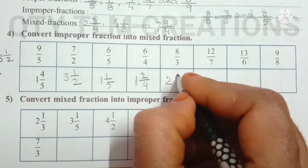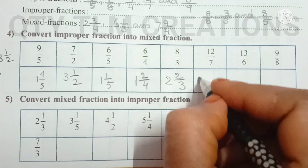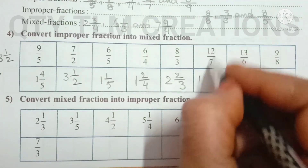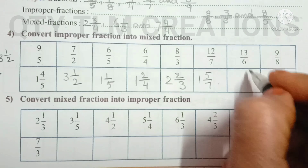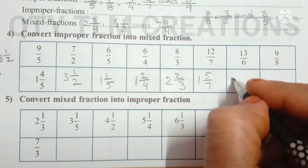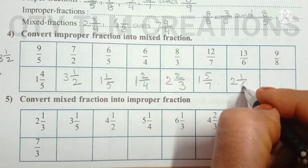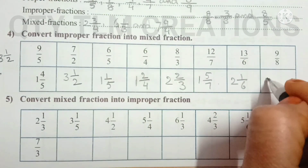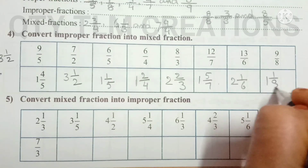Continuing the conversions: 2 and 2/3; for the next fraction, 7 ones are 7, with 5 remainder giving 5/7; then 6 twos are 12 giving 1 and 1/6; and 8 ones are 8 giving 1 and 1/8.